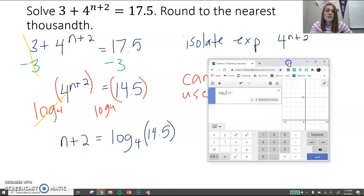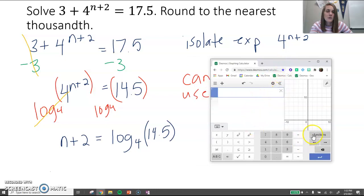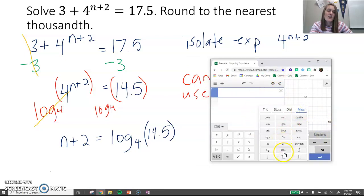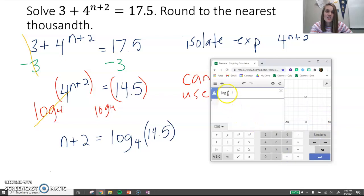So I'm going to use my Desmos calculator. I'm going to click my functions, click miscellaneous, click the log with the base a so I can change that base to 4. Click over to put 14.5 inside my logarithm and I'm rounding to the nearest thousandth. Remember, thousandths is three decimal places, so 1.928, the 9 afterward is going to round that up to 1.929.